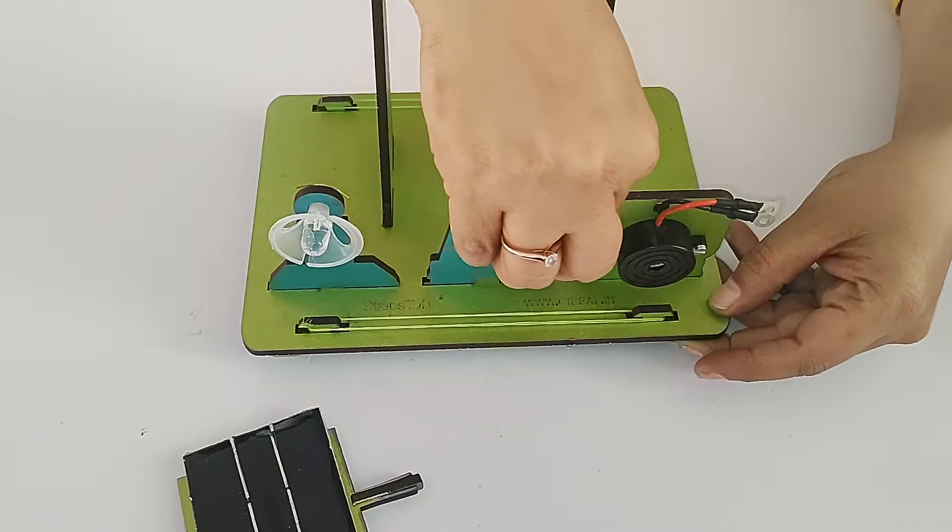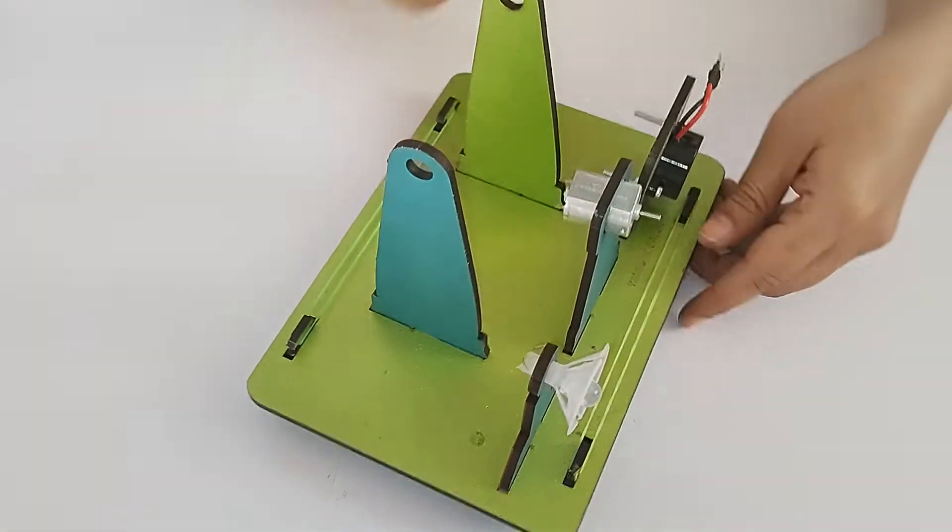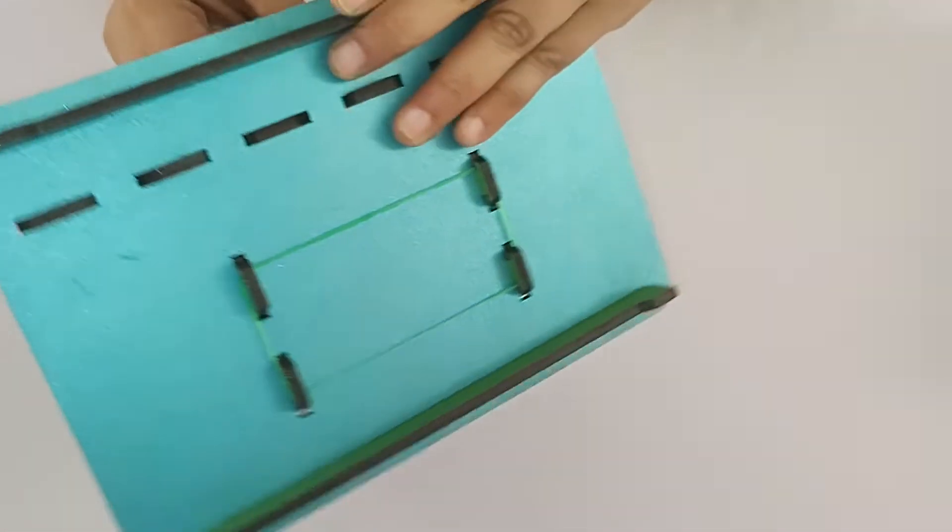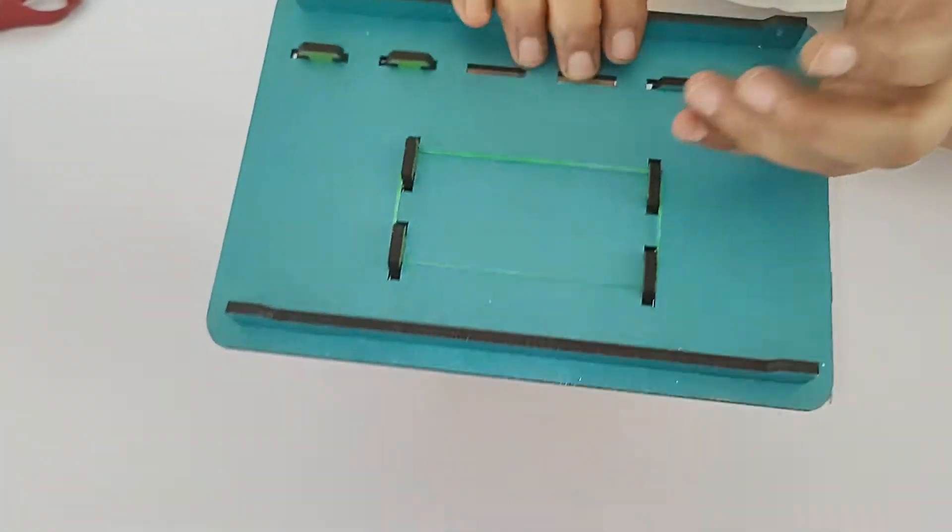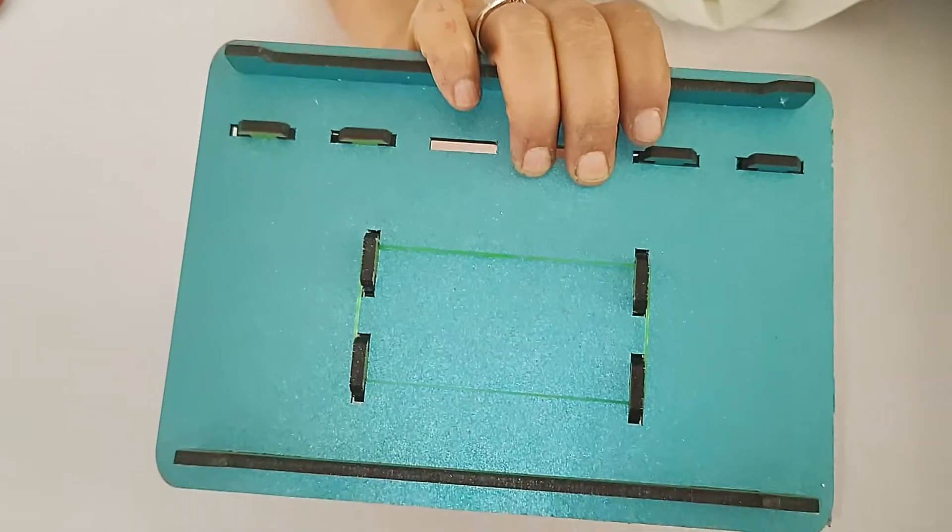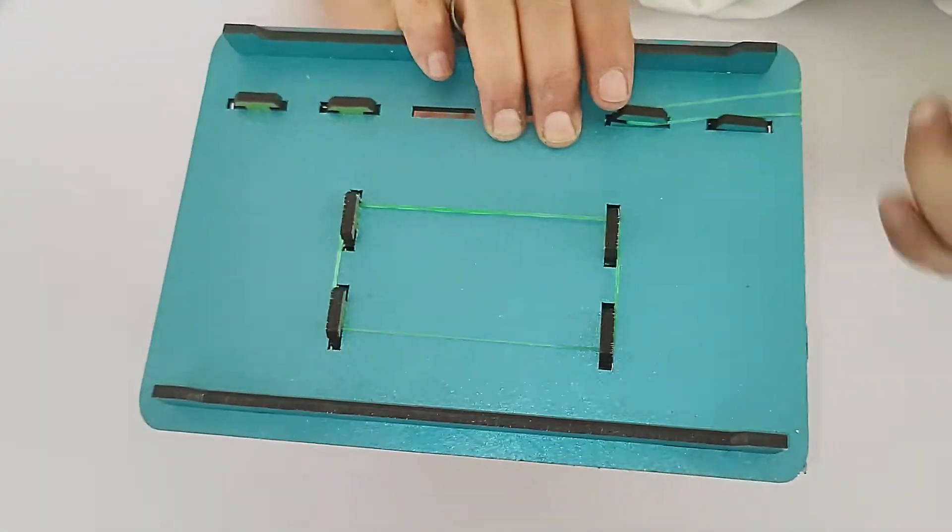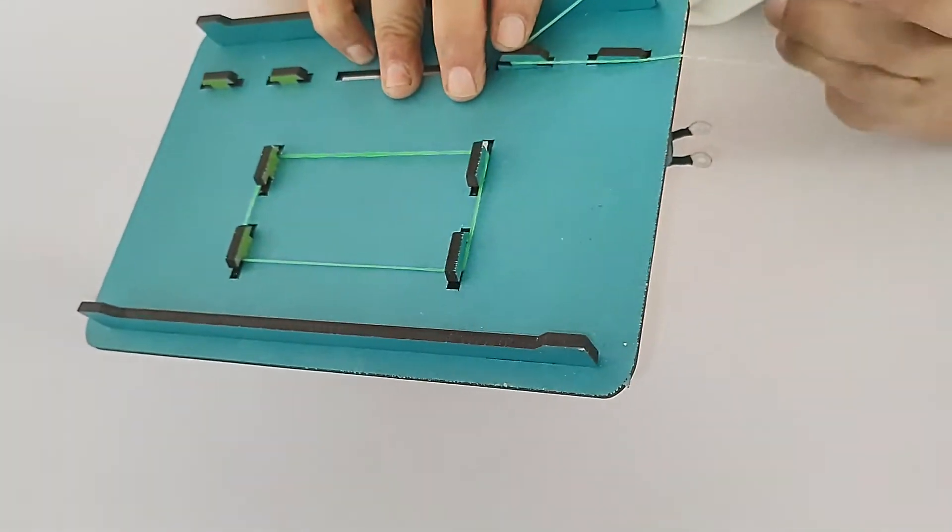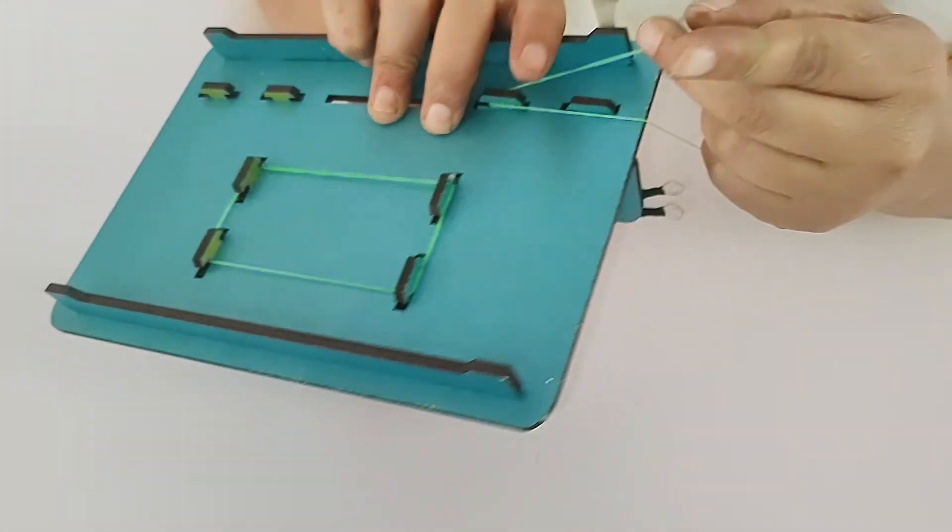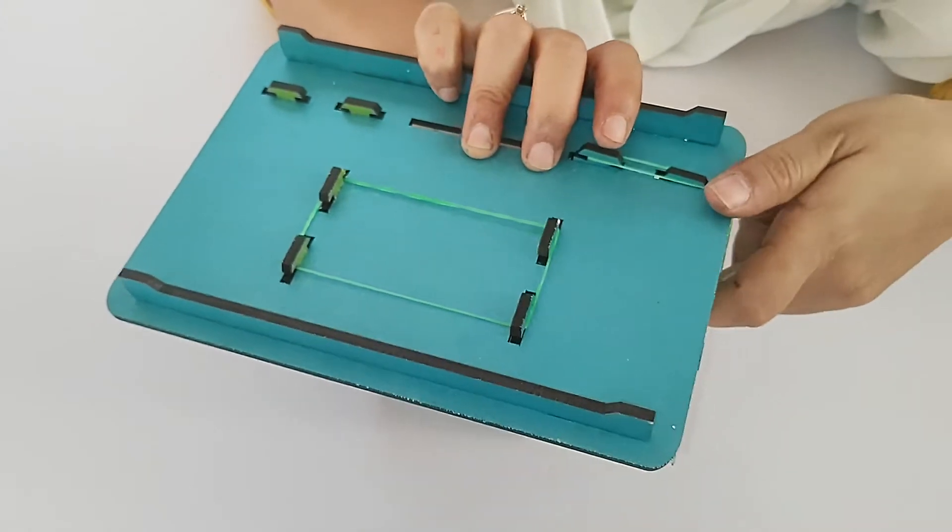Like this, so your basic component base will be ready. Again, same process, fix all these components using rubber bands. Press it like this. Now here you can actually double the rubber band because it is a very small component.